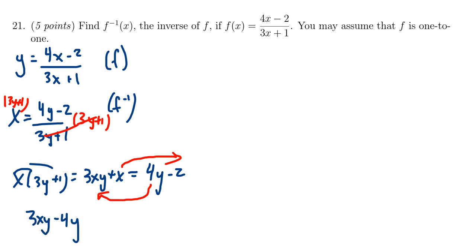Notice here, that's the left-hand side. Since everything's divisible by y, you can actually factor out the y, giving you 3x minus 4. This is going to equal the right-hand side, which is negative x minus 2.